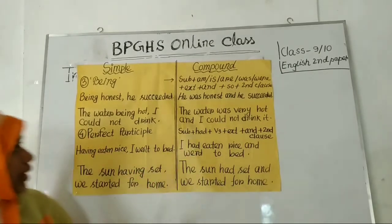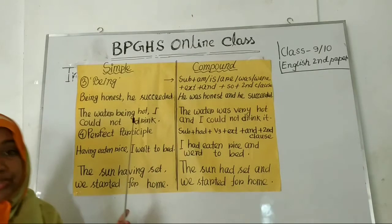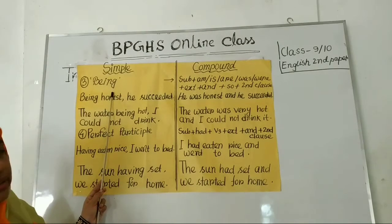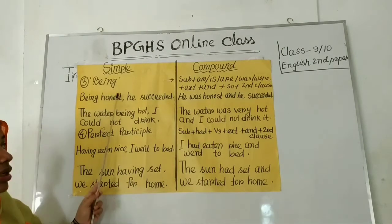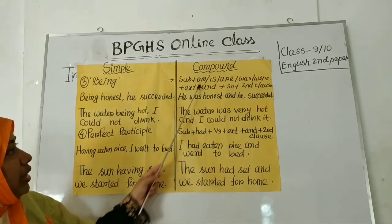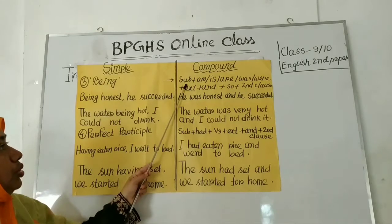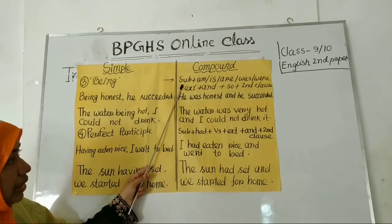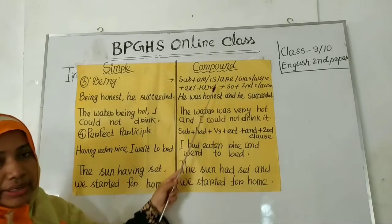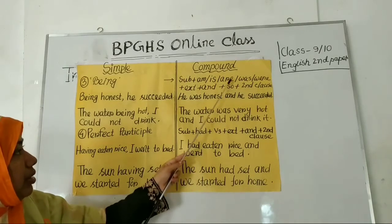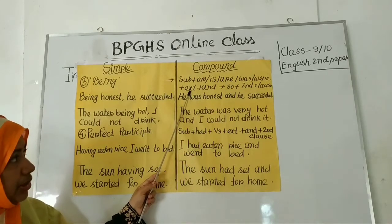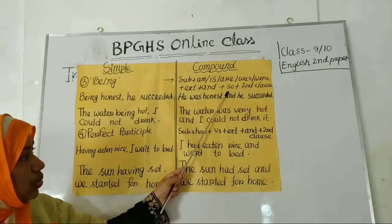Now, rule number three. If you get any simple sentence with being, you will have to make two clauses. To do this, choose a subject, then choose a verb — am, is, are, was, or were — as the finite verb, then add the object or extension. After that, using and so, you will write the second clause.